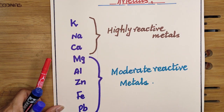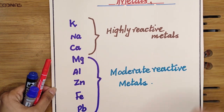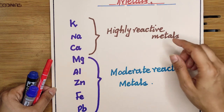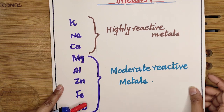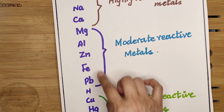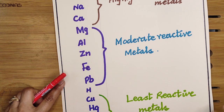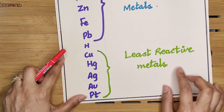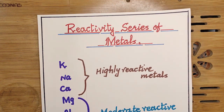After reactions with cold water, steam, and dilute acid, this reactivity series is set up. Metals like potassium, sodium, and calcium react vigorously — these are highly reactive metals. In the middle are the moderately reactive metals. Copper, mercury, silver, gold, and platinum are the least reactive metals; they cannot react with most dilute acids or with cold water or steam.